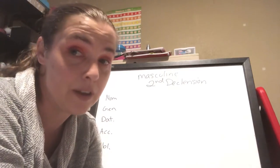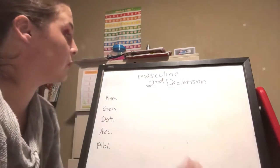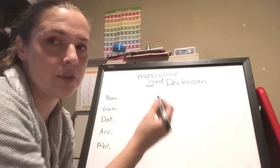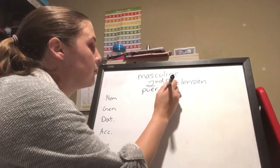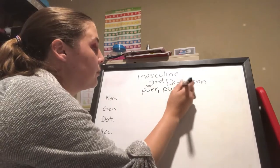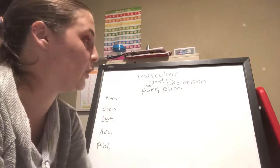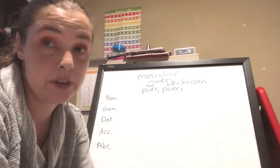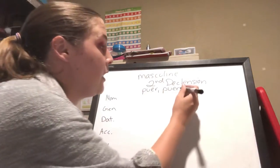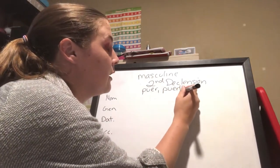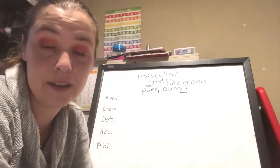I recommend you learn your nominative and your genitive singular for every noun you learn, because it's going to help you find your stem and tell you how the word behaves. When you get to third declension, you will thank me for that habit. We're going to do puer — let's do the counterpart to puella. We're going to find our stem by taking off the genitive singular ending. For the second declension, the genitive singular ending is -I.